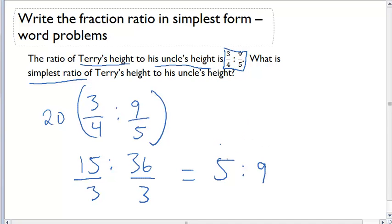So if I have a ratio 3 fourths to 9 fifths, the simplest form of that ratio is 5 over 9.